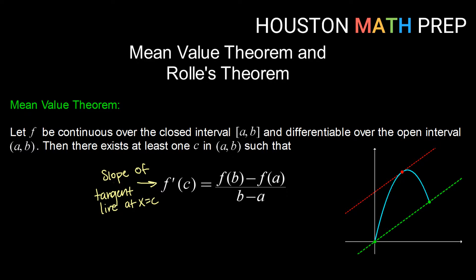c is some x value in the interval and f prime of c would be the slope of that tangent line. We've also seen this quantity before: f of b minus f of a over b minus a — that's also a slope, and that's the slope of a secant line from a to b. So the mean value theorem says if you have a function that is continuous on a closed interval from a to b — no breaks, no jumps, no holes — and the function is also differentiable over the open interval a to b, so the derivative exists everywhere except potentially at the endpoints, then there will be at least one place between the endpoints where the slope of the tangent line is the same as the slope of the secant line.